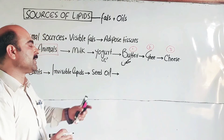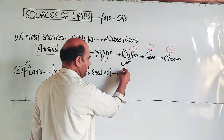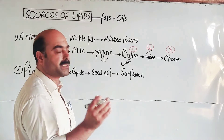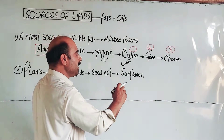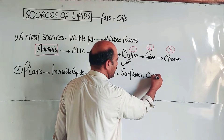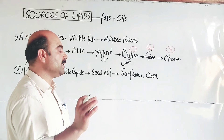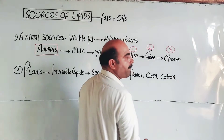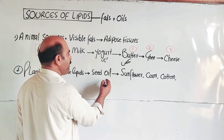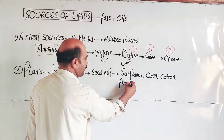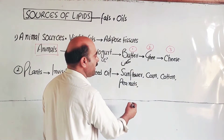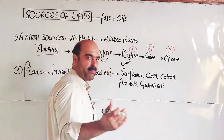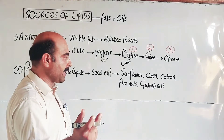Examples of plant seed oils include sunflower — surajmukhi — corn — makki or jowar — cottonseed oil, peanuts — groundnut, mungphali — walnut, and coconut. These are all plant sources where lipids are stored invisibly in the seeds and are extracted as oils.